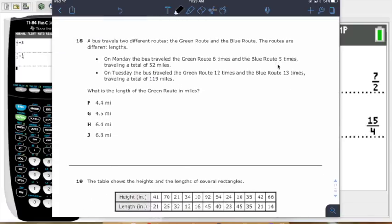Moving along. A bus travels two different routes, the green route and the blue route. The routes have different lengths. Monday, the bus traveled the green route 6x and the blue route 5x, traveling a total of 52 miles. On Tuesday, the bus traveled the green route 12x and the blue route 13x and traveled about 119 miles. What is the length of the green route in miles? You have two situations, two unknowns. That means we need two equations. This is going to be a system of equations.